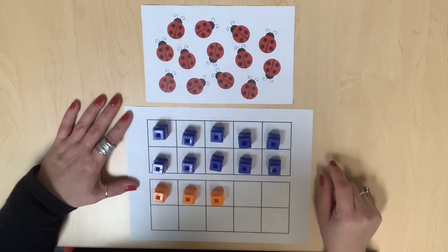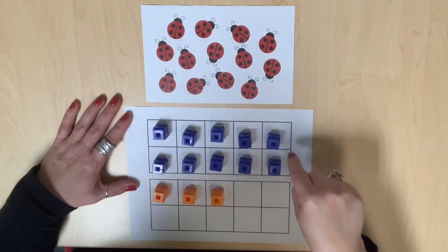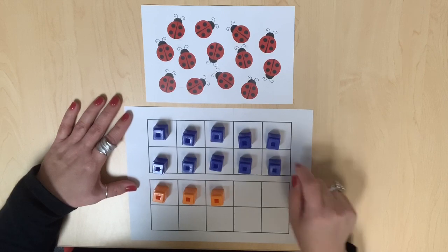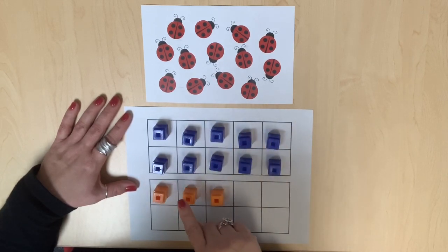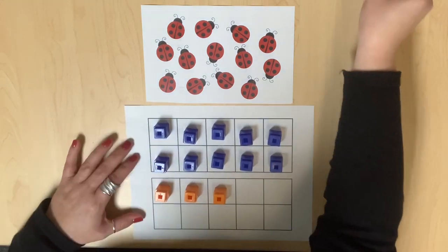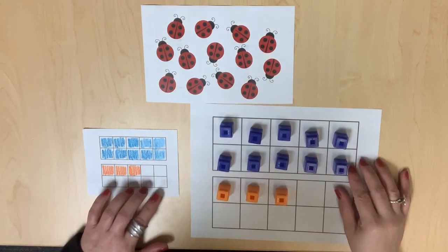We can also recognize that if the first ten frame is completely full, this represents ten and we can count on the quantity represented in the second ten frame: ten, eleven, twelve, thirteen. This quantity can also be represented by shading in the double ten frame.